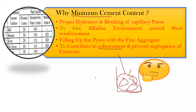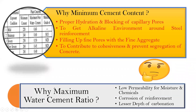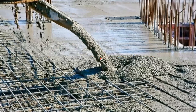Why does the code specify a maximum water-cement ratio? First, low permeability: adding more water increases permeability, allowing water and chemicals to seep through the concrete. Second, to prevent corrosion of reinforcement. Third, to limit the depth of carbonation — when CO₂ enters the concrete it reacts and causes corrosion. To safeguard against all these, the code places a restriction on the maximum water-cement ratio and minimum cement content.